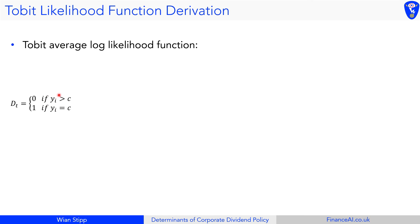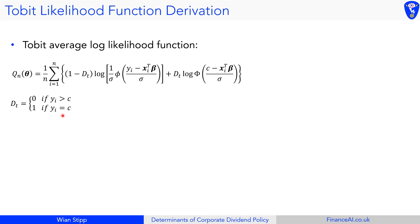This indicator variable helps us distinguish between each component in the log-likelihood function, which we derive in one of the following videos. This is an important slide — I recommend keeping note of it, as it will be used when you build the model in TensorFlow later. When dt equals one, this entire first term is turned off.